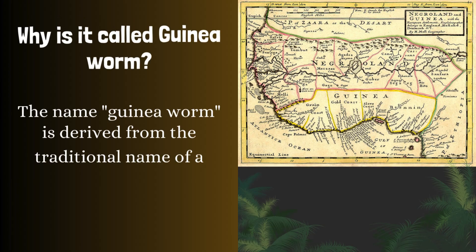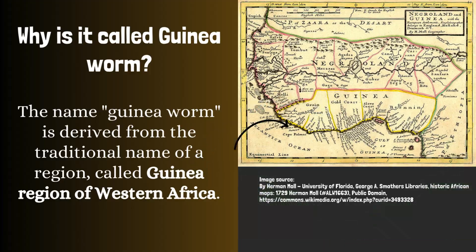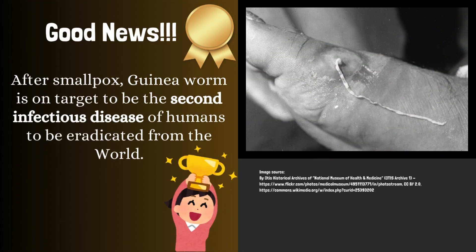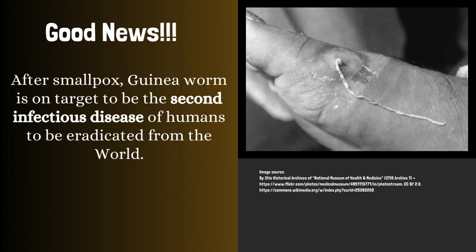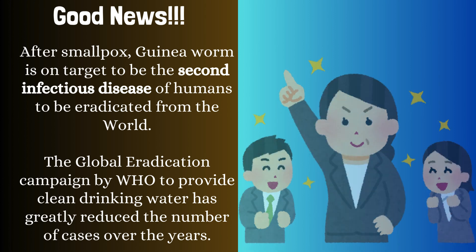Why is it called guinea worm? The name guinea worm is derived from the traditional name of a region called the Guinea Region of Western Africa. Good news: after smallpox, guinea worm is on target to be the second infectious disease of humans to be eradicated from the world. The global eradication campaign by the WHO to provide clean drinking water has greatly reduced the number of cases over the years.